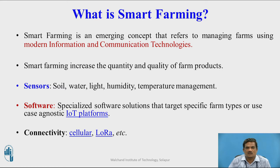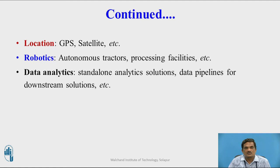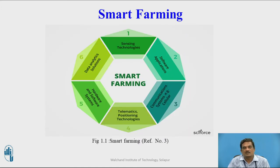Examples of connectivity include cellular and LoRa. For location, GPS and satellites are the IoT concepts being used. In robotics, autonomous tractors and processing facilities are used. IoT is also being used in data analytics in order to analyze the data received from different locations. These are the different technologies being used in smart farming.